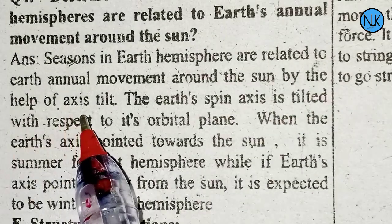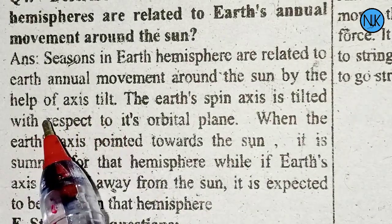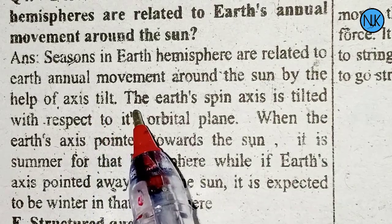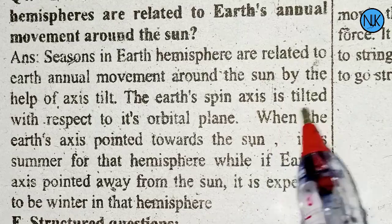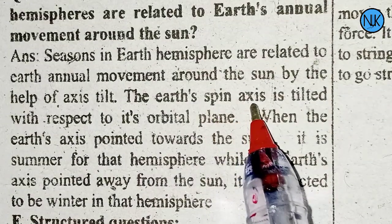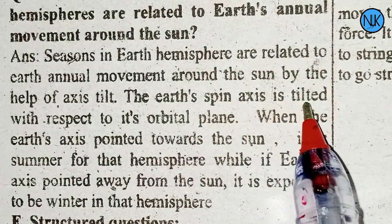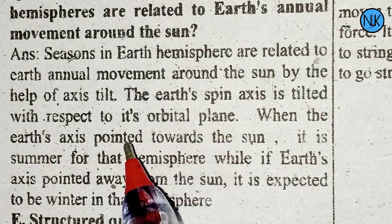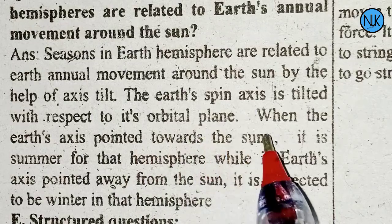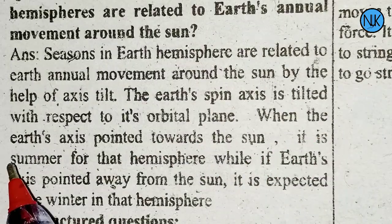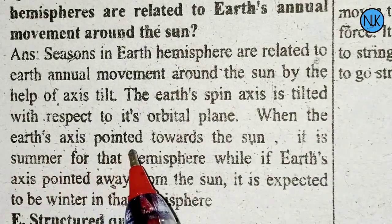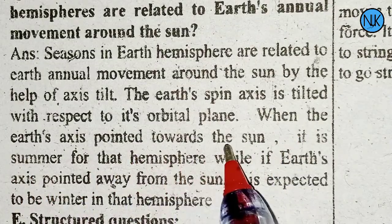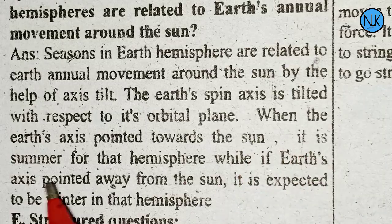The axis is tilted. The Earth's spin axis is tilted with respect to the orbital plane. When the Earth's axis is tilted toward the sun, it is summer in that hemisphere. When it tilts away from the sun, it is winter in that hemisphere.